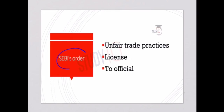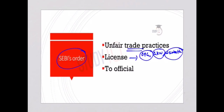SEBI has ordered a fine of Rs. 1000 crore and found certain unfair trading practices involving brokers like OPG Securities, GKN Securities, and Way to Wealth, along with internet service providers like Sambark Infotainment. These brokers, along with certain internet service providers, were found guilty of unfair trading practices.